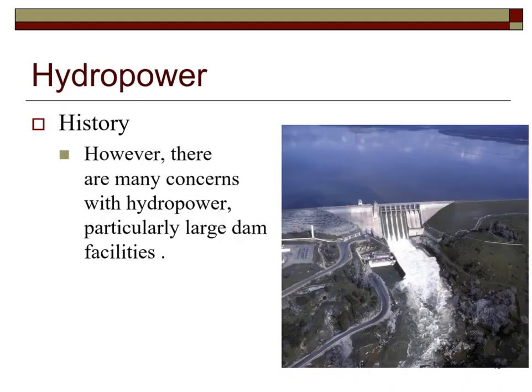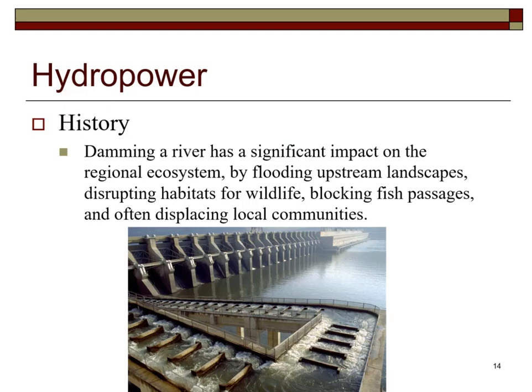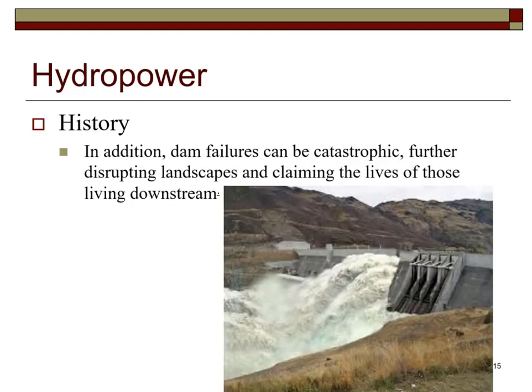However, there are many concerns with hydropower, particularly large dam facilities. Damming a river has a significant impact on the regional ecosystem by flooding upstream landscapes, disrupting habitats for wildlife, blocking fish passage, and often displacing local communities. Dam failures can be catastrophic, further disrupting the landscape and claiming the lives of those living downstream.